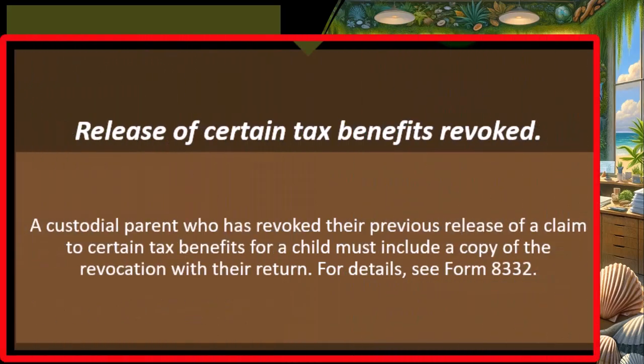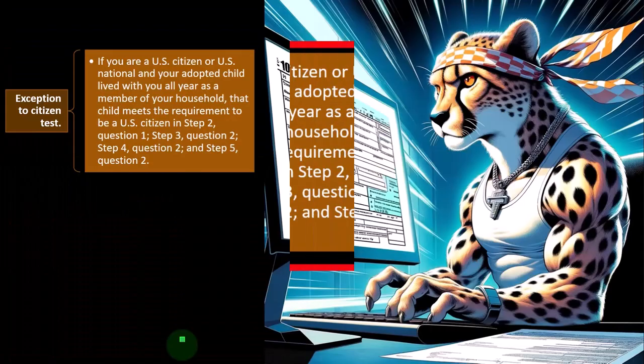Release of certain tax benefits — revoked. A custodial parent who has revoked their previous release of a claim to certain tax benefits for the child must include a copy of the revocation with their return. So now they got mad, got a new lawyer, and the new lawyer said, 'What are you doing?' So then they revoked it. For details, see Form 8332.